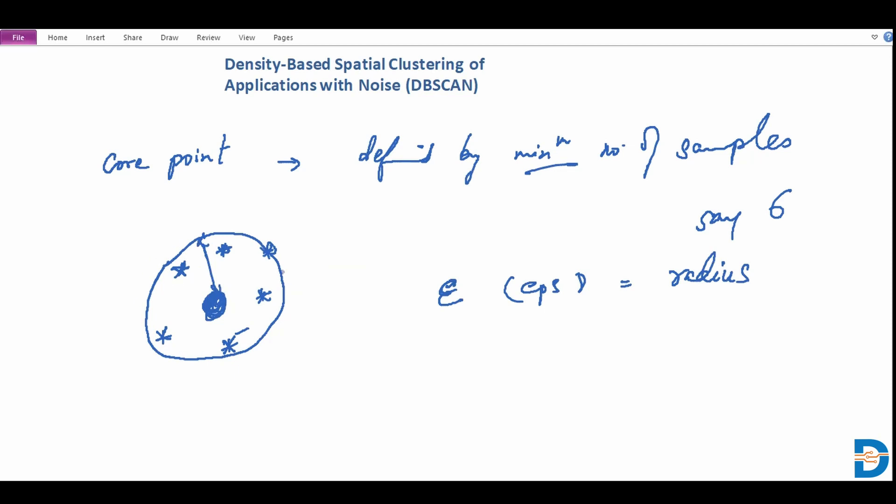So once we have this particular core point defined by the number of samples as well as this radius, the distance, we can actually begin by creating a cluster. And from these points, if this is also a core point, basically we tend to expand our cluster and also include the points that are within the new cluster.